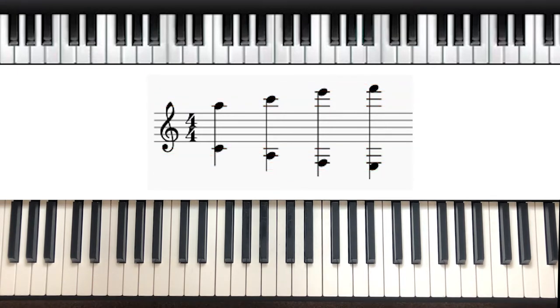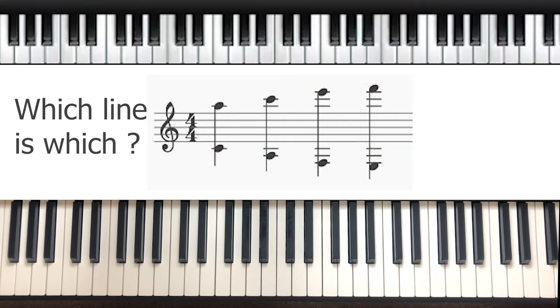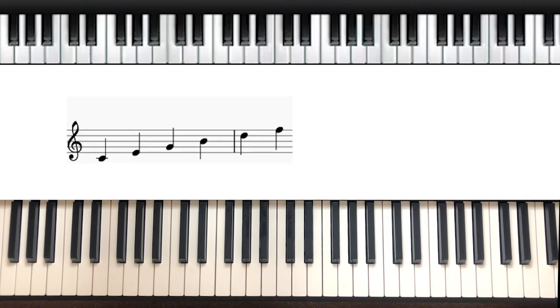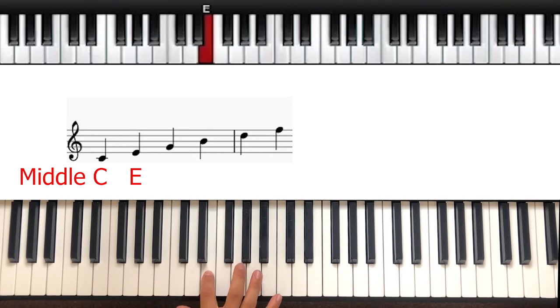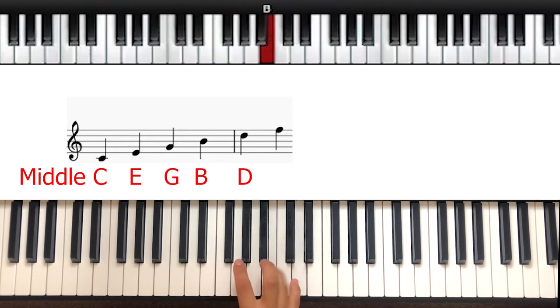So how are we supposed to know which line is which on the ledger lines? If we start with the treble clef, we can work through the lines from middle C to go E, G, B, D, and the top line which is F.